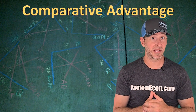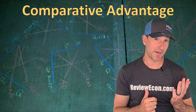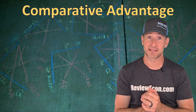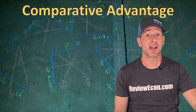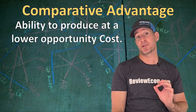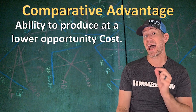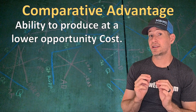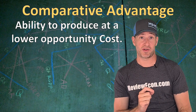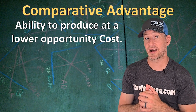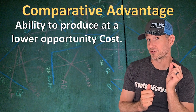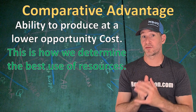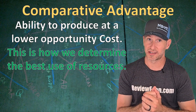Absolute Advantage is something you need to know on the AP Microeconomics and Macroeconomics exams. But what's more important in economics is Comparative Advantage. Comparative Advantage is the ability to produce something at a lower opportunity cost. Opportunity cost is what you give up when you make a choice — in this case, the opportunity cost for the production of grain or meat. This is how we determine the best use of resources in the production of goods.